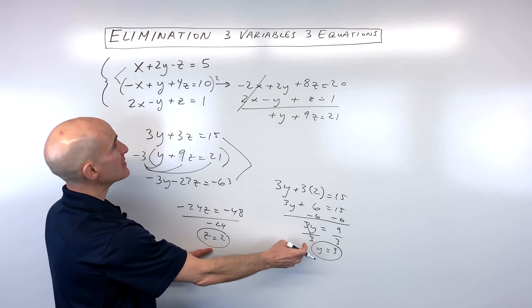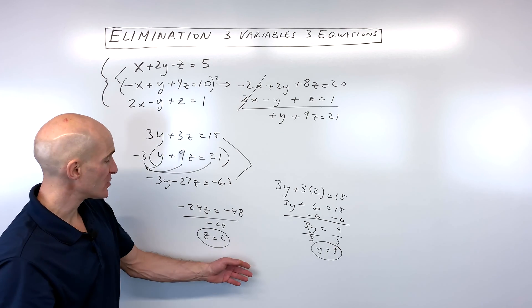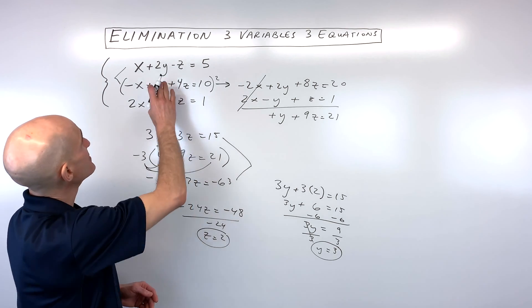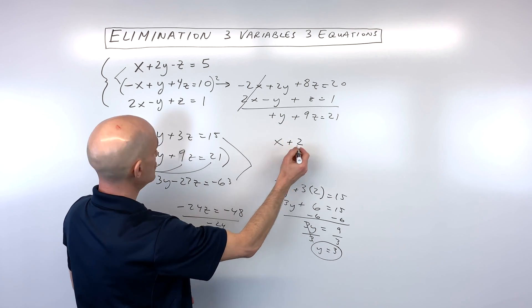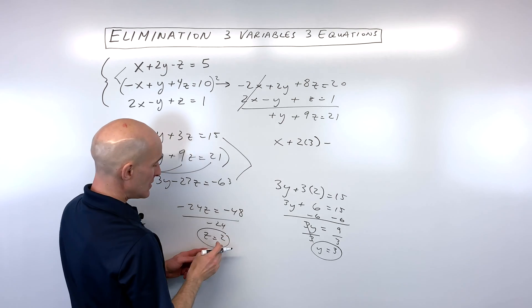Now all we have to do, we've got y and z, is we can put it back into one of the original equations that has three variables and solve for x. So I'm going to go ahead and put it into this top equation here. This is x plus 2 times y, which is 3, minus z, which is 2,